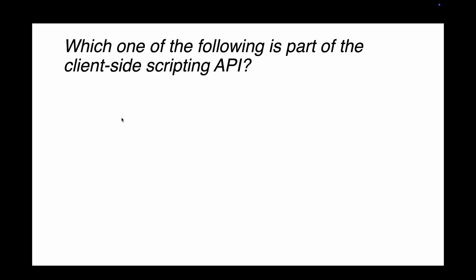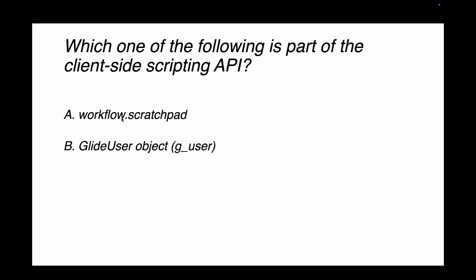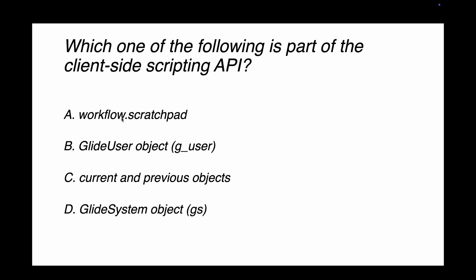Question 2: Which of the following is part of the client-side scripting API? Options are workflow.scratchpad, GlideUser object (g_user), current and previous objects, or the GlideSystem object. Since we're discussing client-side, current/previous and GlideSystem are server-side and workflow.scratchpad is not used client-side. GlideUser — g_user — is used on the client side, so that is the right answer.